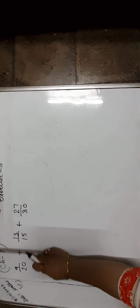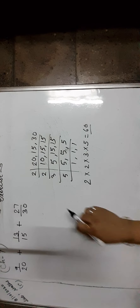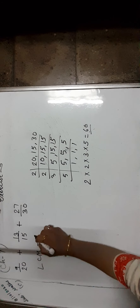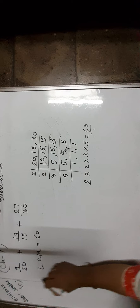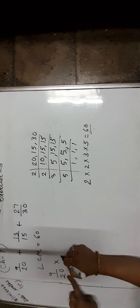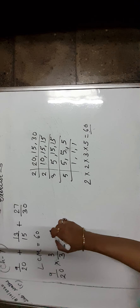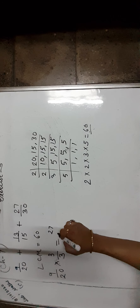Now, 9 upon 20 plus 13 upon 15 plus 27 upon 30. The given fractions are unlike. To make them like, first find the LCM of the denominator. The LCM of 20, 15, and 30 is 60. Let us form equivalent fractions with this denominator. Take the first fraction that is 9 upon 20. How much do we multiply? In 20 to get 60 — it is 3 times. So both numerator and denominator are multiplied by 3, which is equal to 27 upon 60.